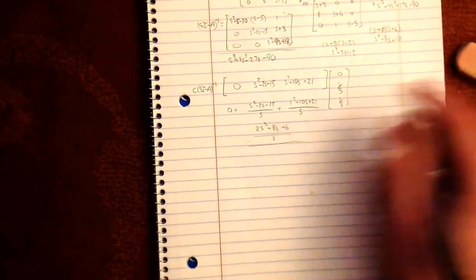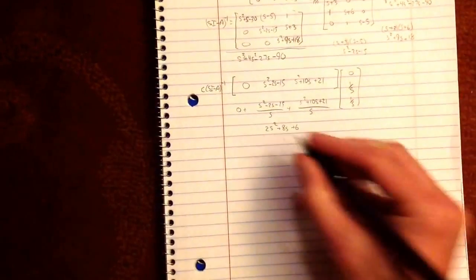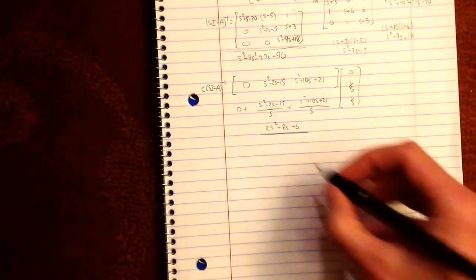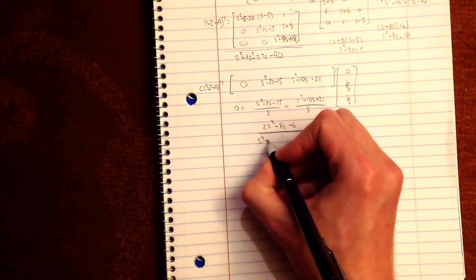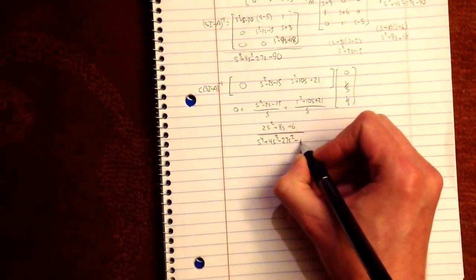So in order to get rid of the S, I'll just get rid of it now, you multiply top and bottom by S. So that means your new denominator is simply everything with an extra power of S. And that is your transfer function.